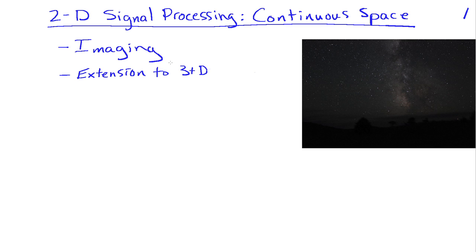Now, the obvious application for 2D signal processing is imaging. And another value of looking at the 2D case is it becomes apparent how to extend our signal processing ideas to three and higher dimensions.